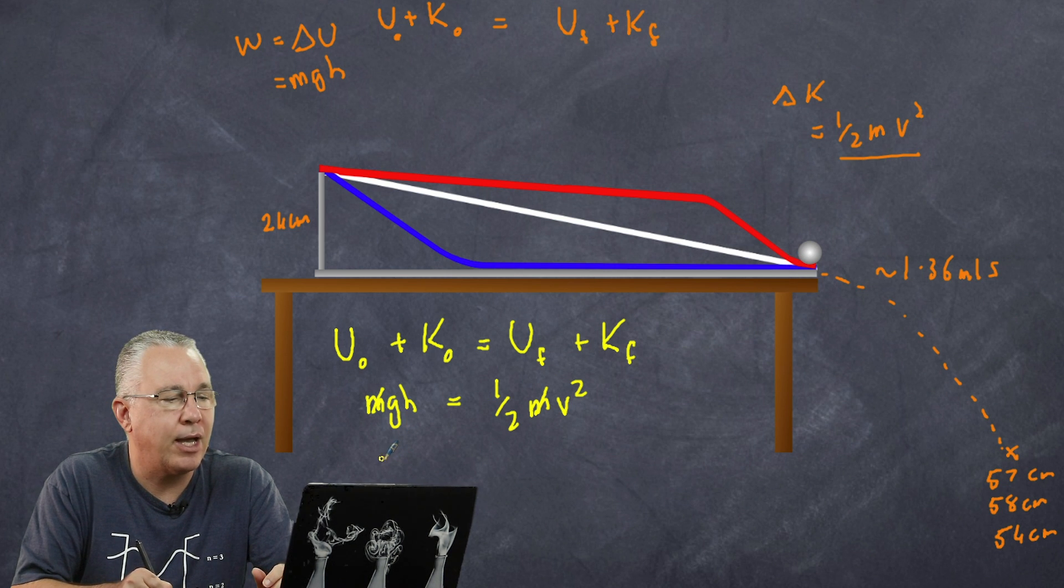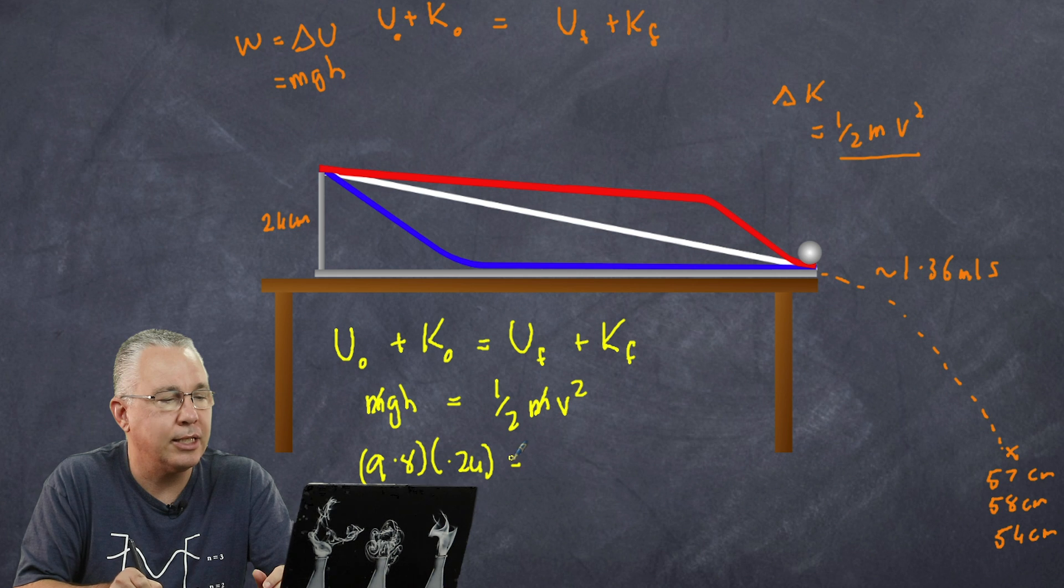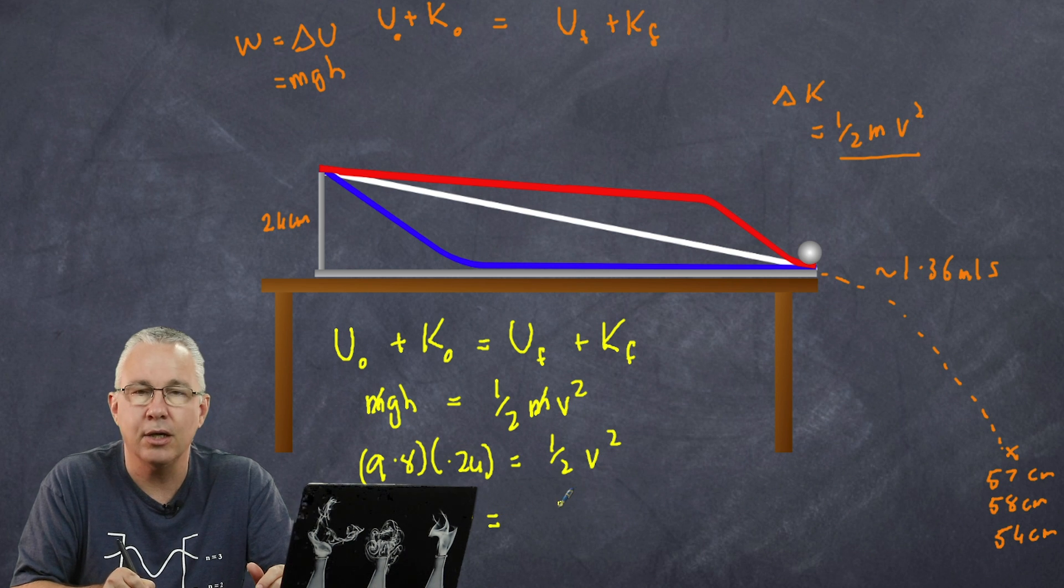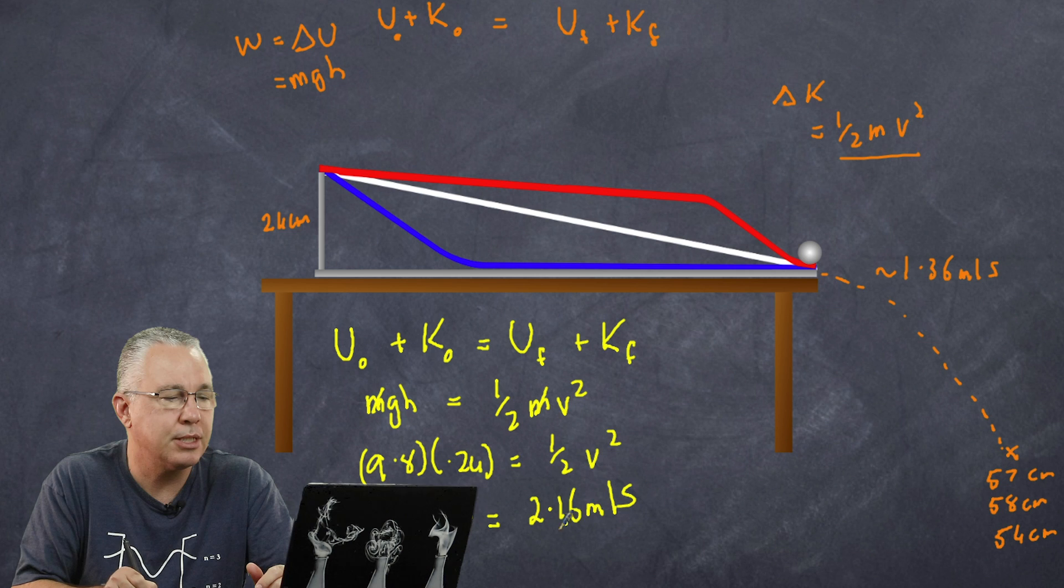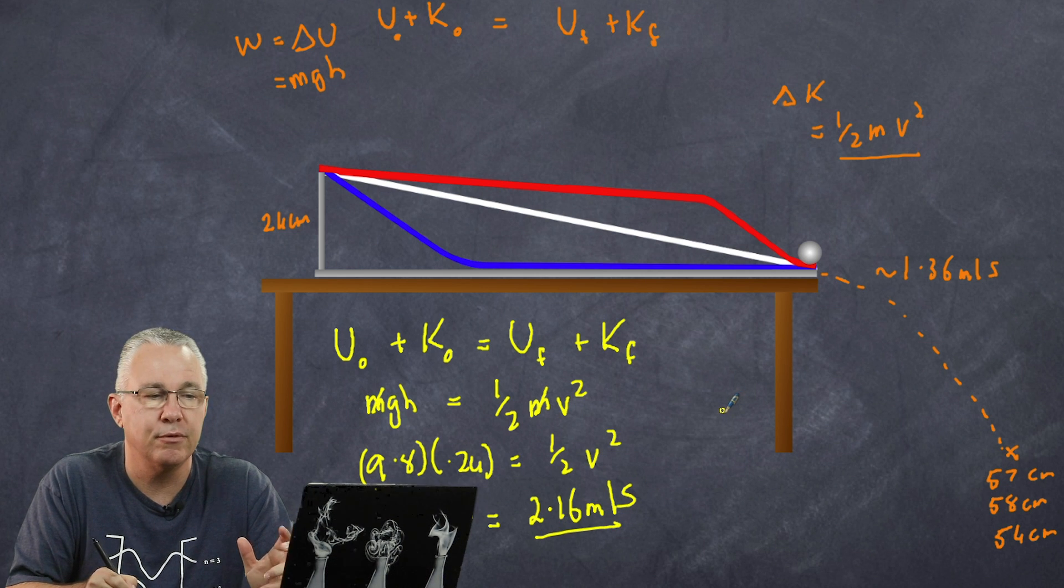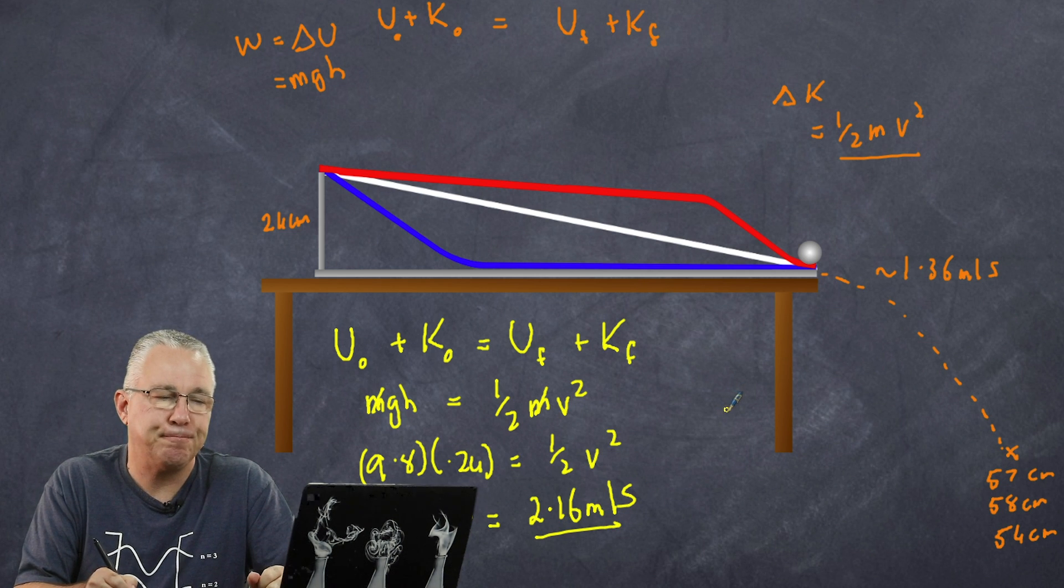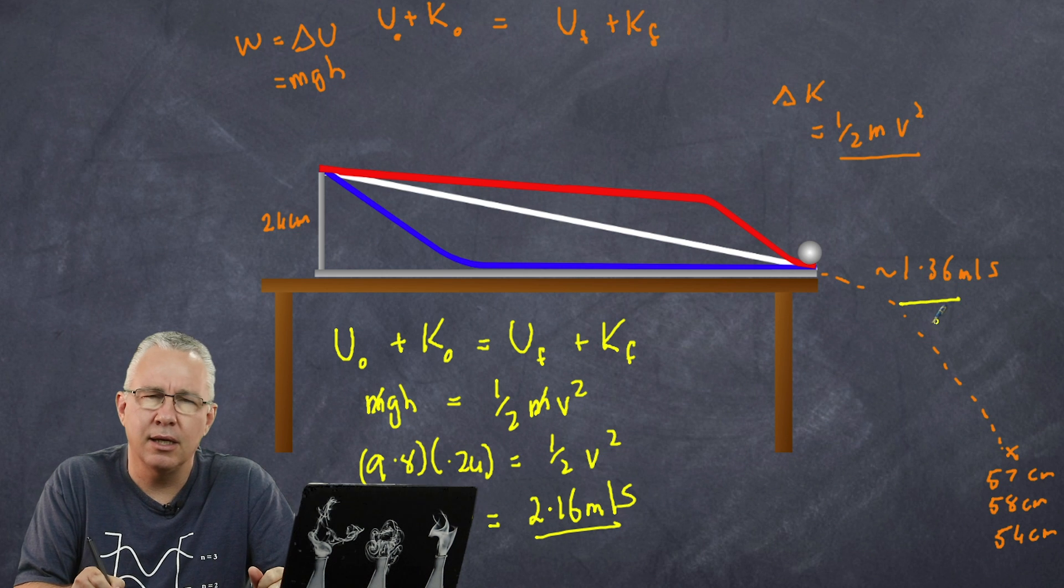So we have 9.8 as our acceleration due to gravity. We multiply it by the height which is equal to 0.24. That is equal to a half v squared. Now if I calculate v out from this situation, I'm going to get a value of 2.16 meters per second. That should be the velocity of the ball that goes off the ramp. But hold on here. I've got a value of 1.36 meters per second. Why is that?